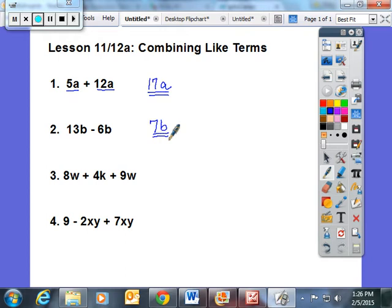Now you have an expression with three terms, two of which have a common variable. I would like you to circle the common variable and any sign that goes in between it. If you have 8w's and you add 9 more w's to it, the answer would be 17w, and you have to add on your 4k.